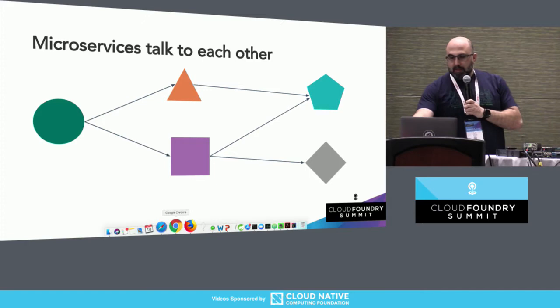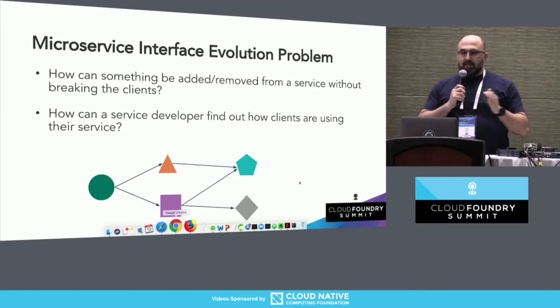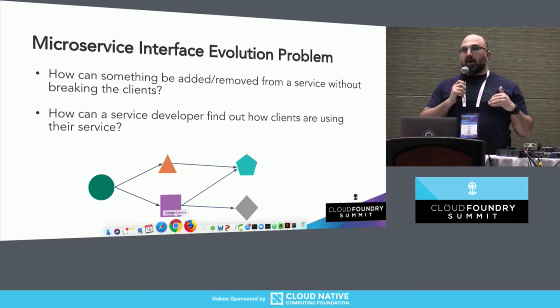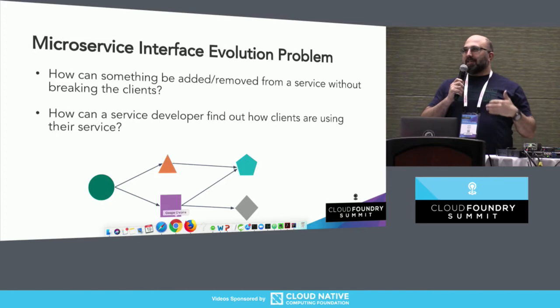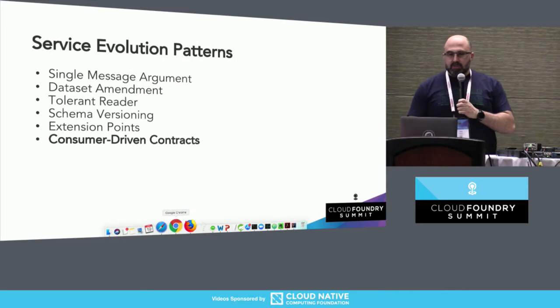We have all these services — let's say I have a green microservice that calls the rectangle microservice, which calls the pentagon microservice. What would happen if I added or removed something? Raise your hand if you modified an API and were quite concerned that one of your clients would break, and you left something in there just because you didn't want anybody screaming at you for breaking the code. This is the service evolution problem: can I add something, can I remove something, and if I did, have I done it in a safe way?